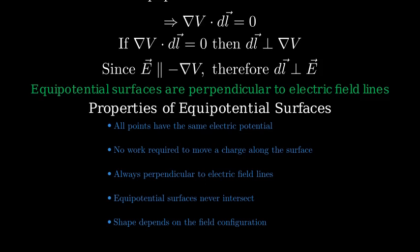And fifth, for a point charge, equipotential surfaces are concentric spheres. For a uniform field, they are parallel planes.